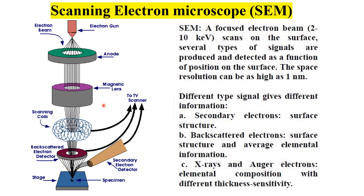This diagram shows the scanning electron microscope. It has an electron beam which scans the surface of the specimen, and the spatial resolution can be as high as one nanometer.